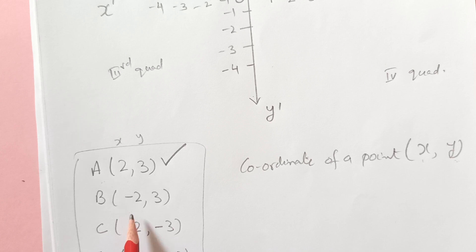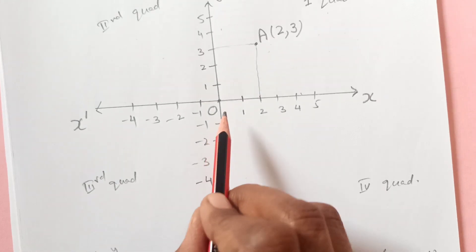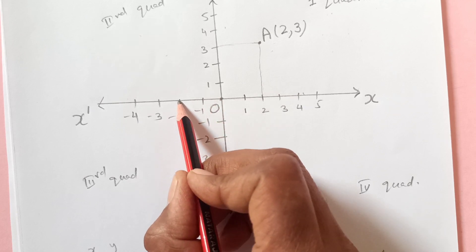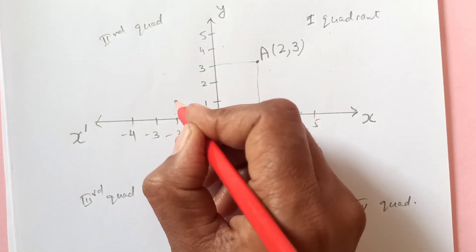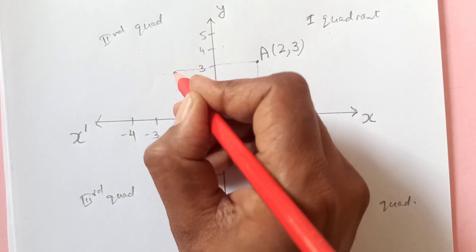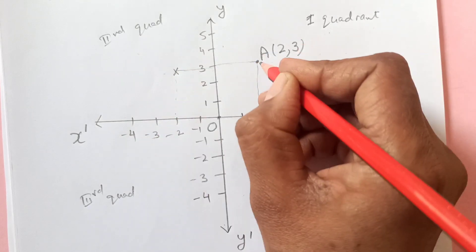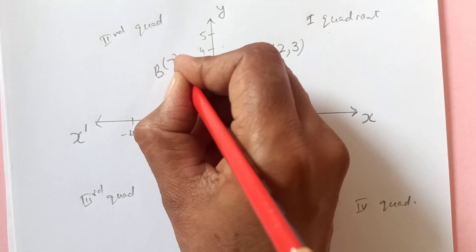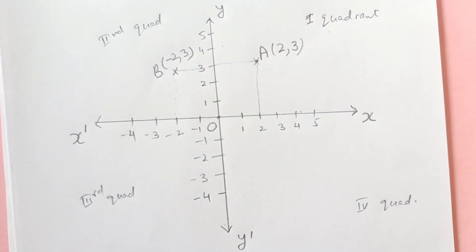Next is B (-2, 3). Now what is x here? x is -2. We will start from the origin again, negative 2. Then we have y is 3, so going above. So this is 3. So this is going to be our point. This was A and this is point B which is (-2, 3).